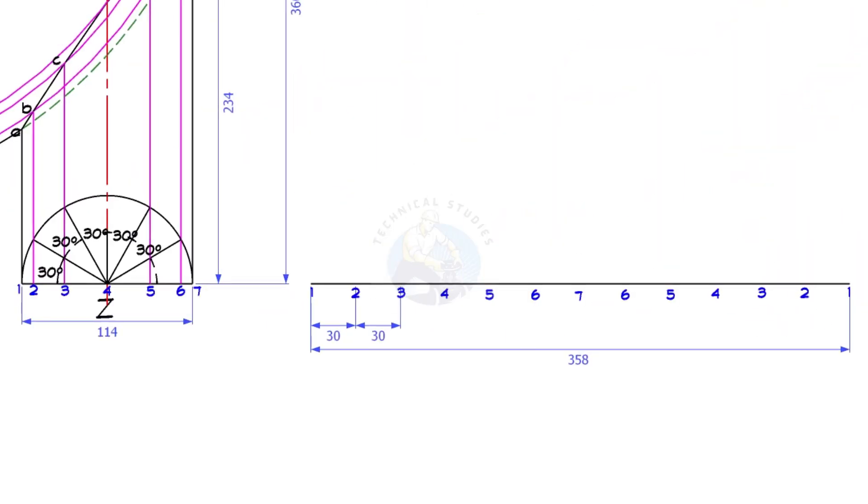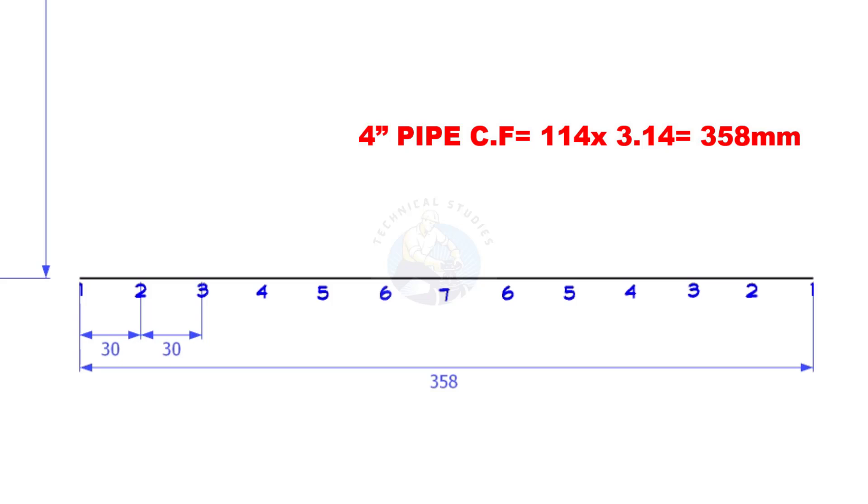Draw a straight line. The length shall be 358 millimeters, that is the circumference of the trunnion. Divide this line into 12 equal parts.